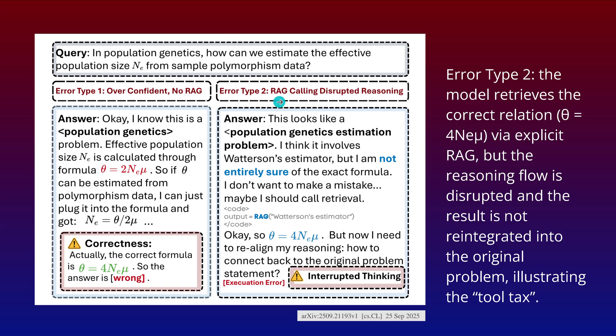Error type two is much more interesting. It's a RAG calling that disrupts the reasoning traces of the LLM. It's like a human — you're thinking about something, you say you need more information, so you go have a deep dive, maybe you Google, you come back with the solution and say, where was I in my reasoning process? How do I integrate this new data into my old reasoning traces? How do I modify the reasoning traces? LLMs have the same problem — they mimic human behavior.